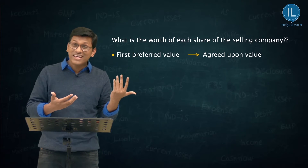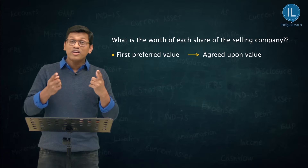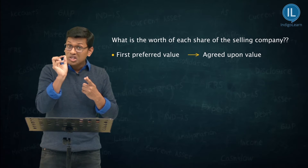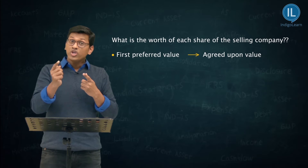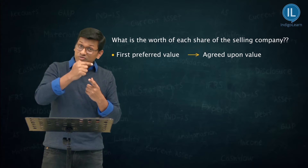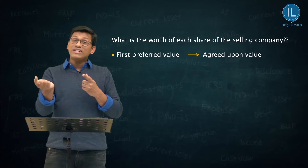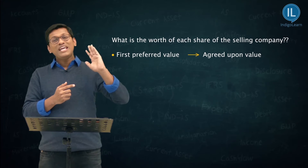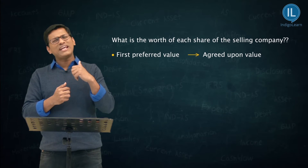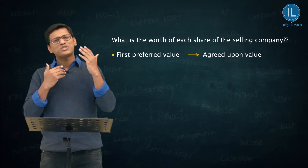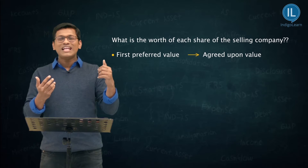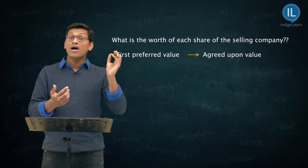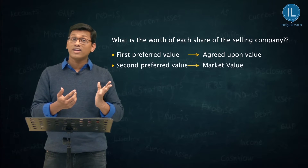What if that is not given? Please pay attention to this. You have to first search for the agreed upon value. If it is not given, then you will talk about the next one. If an agreed upon value is not given, then you will look for something called market value.